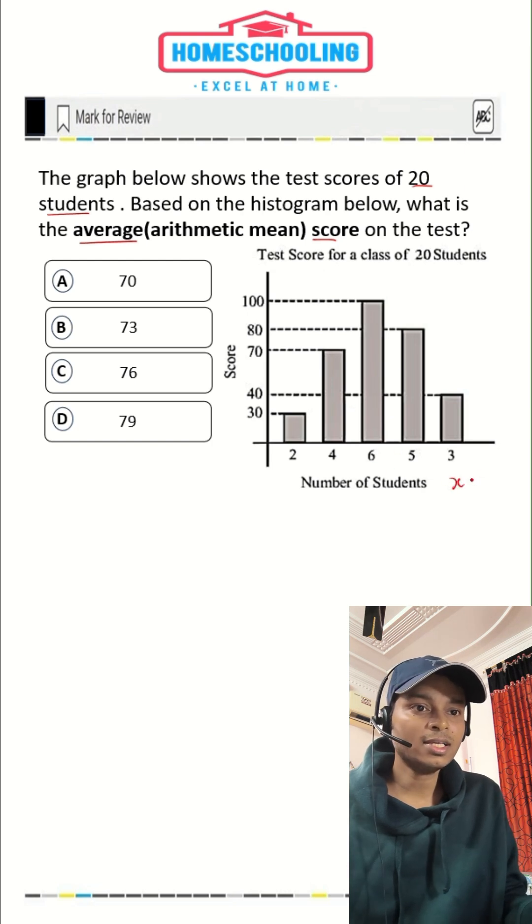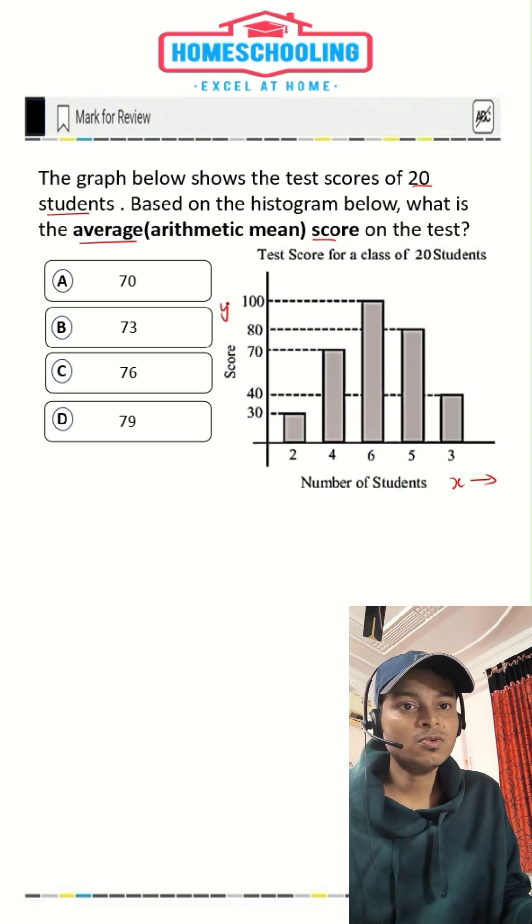As we can see, on the x-axis we have number of students or the frequency of students, and on the y-axis we have score here.